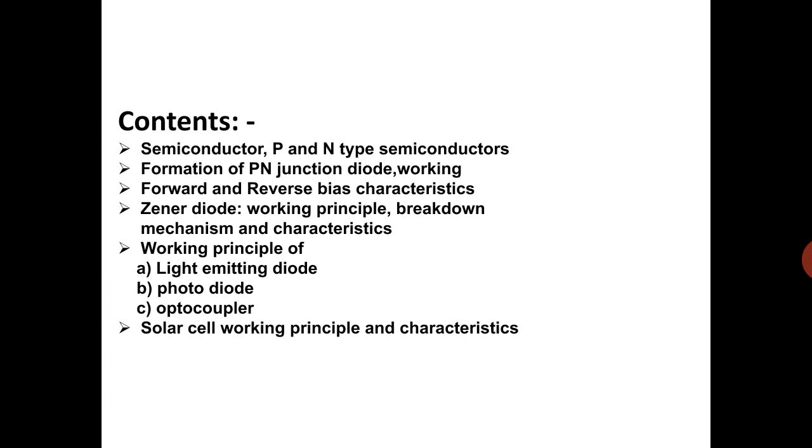Semiconductor, P and N type semiconductor. Second topic is formation of PN junction diode and working. Third one is forward and reverse bias characteristics. Fourth one, Zener diode, its working principle, breakdown mechanism and characteristics. Fifth one, working principle of LED or light emitting diode, photodiode and optocoupler. And last one is solar cell working principles and characteristics. This is the content of chapter first.